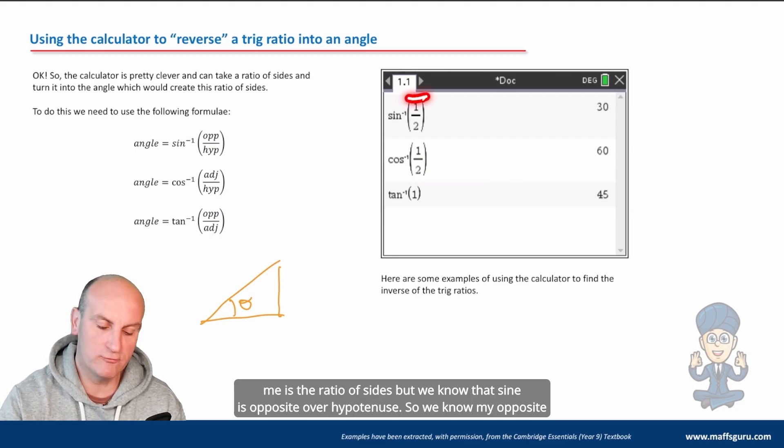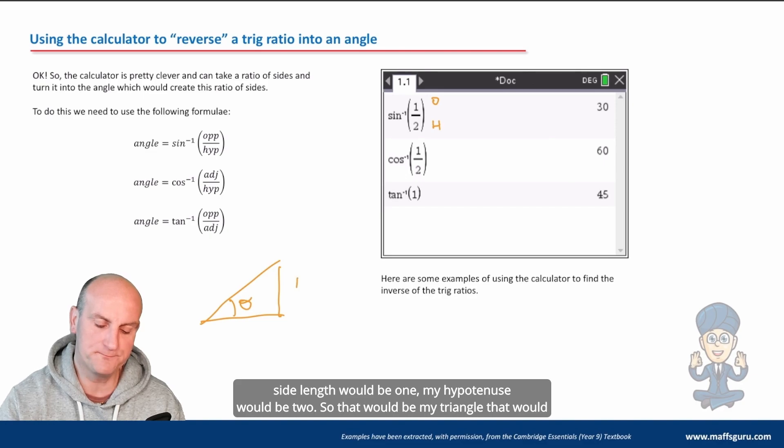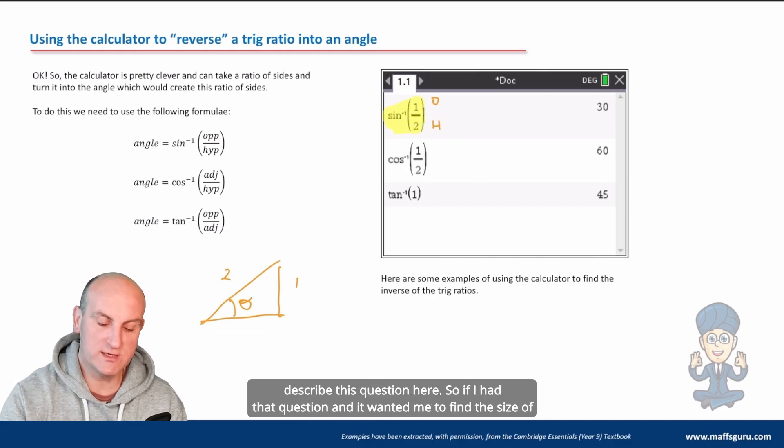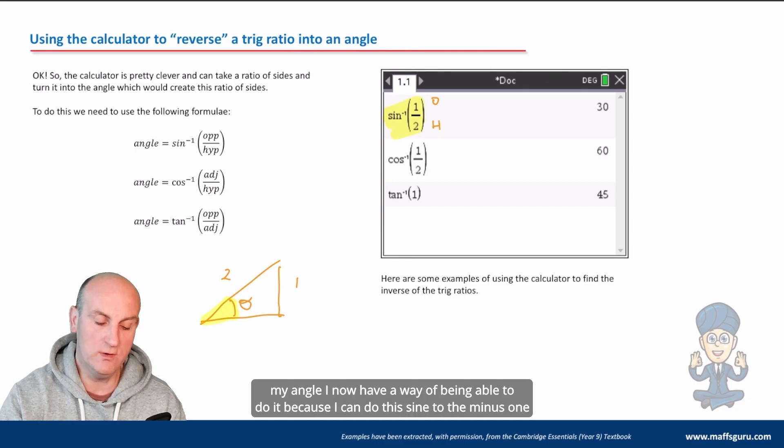All they've given me is the ratio of sides. But we know that sine is opposite over hypotenuse. So we know my opposite side length would be one. My hypotenuse would be two. So that would be my triangle that would describe this question here.